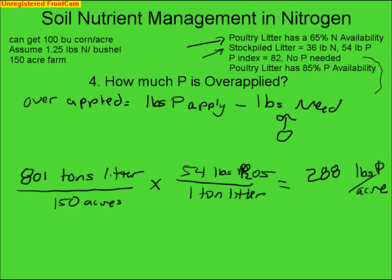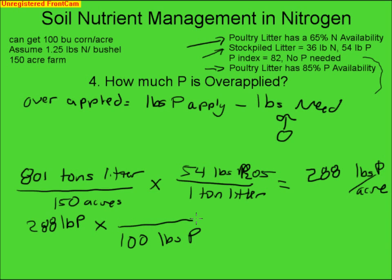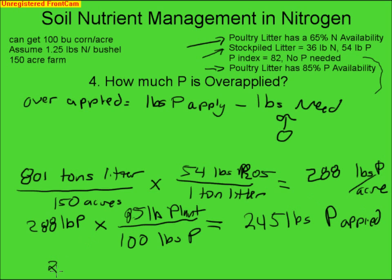We take that 288 pounds of P per acre and determine our plant-available phosphorus. Our poultry litter has 85% of phosphorus that is plant-available, so we take 288 pounds of P times 85 pounds plant-available per 100 pounds of P. That equals a total of 245 pounds of P applied, and 245 minus 0 equals 245 pounds of P over-applied.